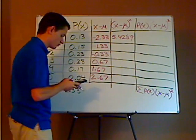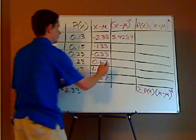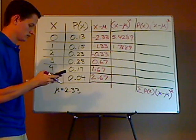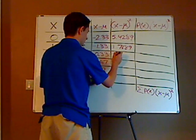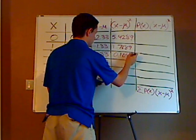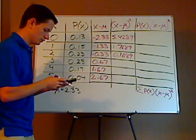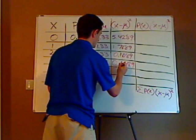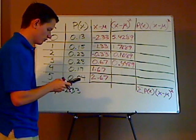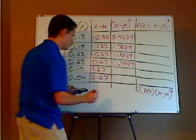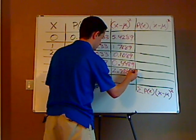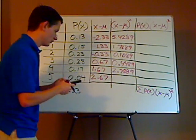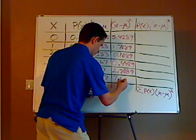So take this, square it, which would be 1.7689. These are all going to be positive by the way, because you're squaring the number. 0.33 squared is 0.1089. 0.67 squared is 0.4489. And then you have 2.67 squared, which is 7.1289.